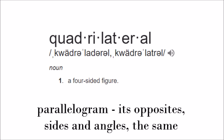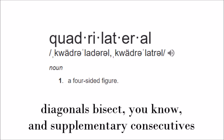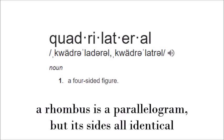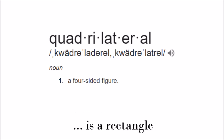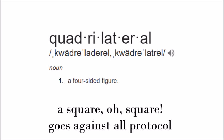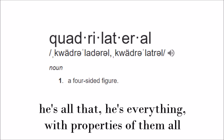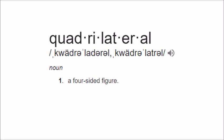Parallelogram: its opposite sides and angles are the same. Diagonals bisect each other. Supplementary consecutive angles. A parallelogram with all sides identical — but a parallelogram with 90s is a rectangle. A square goes against all protocol — he's everything, with properties of them all.